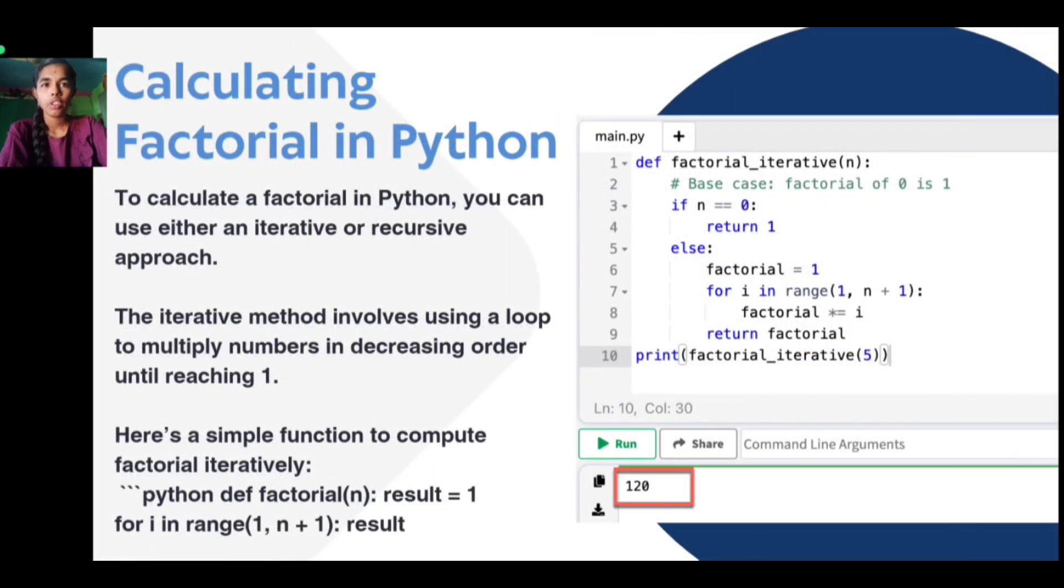Now we will see how to calculate factorial using Python. To calculate a factorial in Python, you can use either an iterative or recursive approach. The iterative method involves using a loop to multiply numbers in decreasing order until it reaches 1.